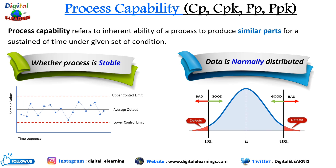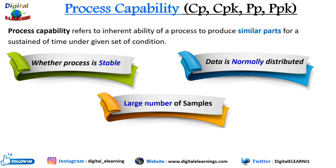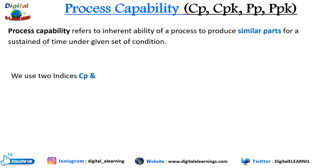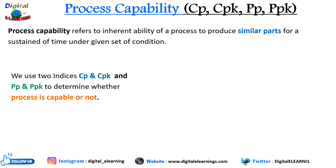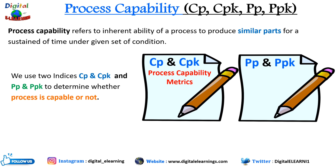Once the process is both normal and stable, its capability can be evaluated effectively using various statistical methods such as cp, cpk, pp, and ppk. These measures help determine whether the process can consistently meet the specific requirements and whether adjustments or improvements are necessary. We also need a large number of samples to ensure an accurate and reliable assessment. In process capability, we use cp, cpk, pp, and ppk indices to determine whether the process is capable or not.